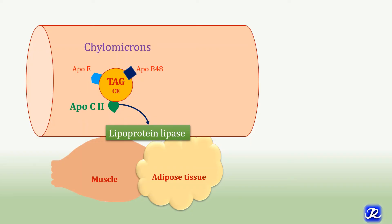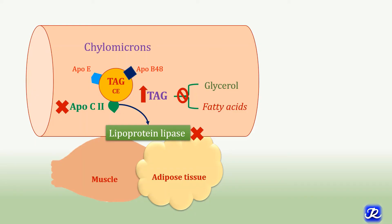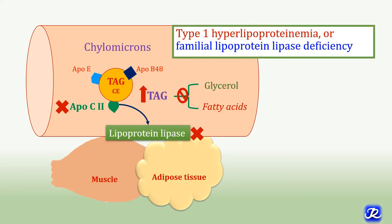If ApoC2 is not functioning properly, it cannot activate lipoprotein lipase, and if lipoprotein lipase is defective or not properly expressed, it cannot hydrolyze the triacylglycerol of chylomicrons into glycerol and fatty acids. This leads to increased levels of triacylglycerol in the blood, a condition called Type 1 hyperlipoproteinemia or familial lipoprotein lipase deficiency. The cause is either defective or deficient lipoprotein lipase, or ApoC2 deficiency.